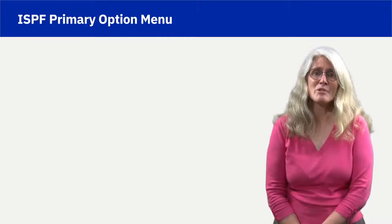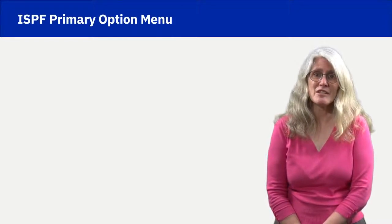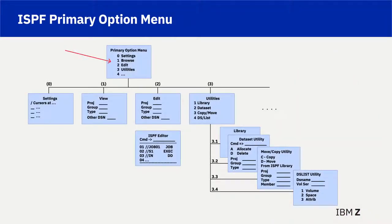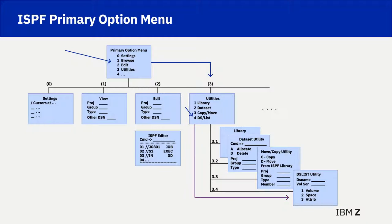ISPF is a panel-driven interface. This chart highlights a very commonly used set of panels. Option 3, Utilities, displays a set of utility options. Option 4, DSList, displays another very useful panel — the Dataset List Utility panel — which includes many useful functions.